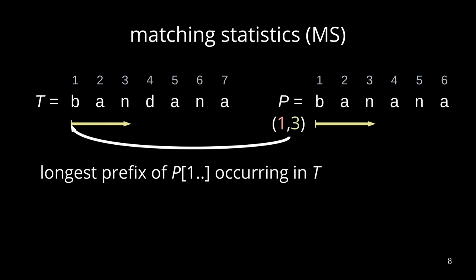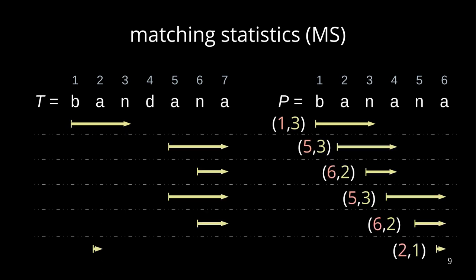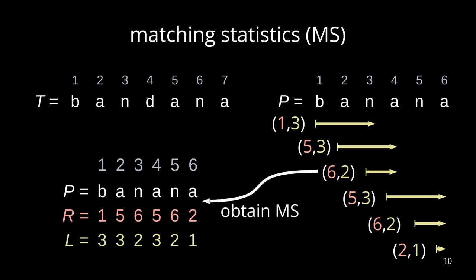To compute the matching statistics, we can just scan the pattern linearly, and for each pattern position, query the LCP with all text positions. And then I get the following picture, where on the left-hand side you see the references, and on the right-hand side you see the matching statistics. If you write these numbers in tabular form, you get this table at the beginning.